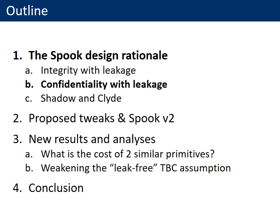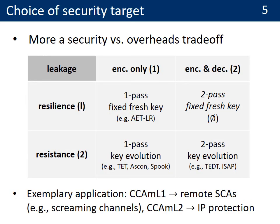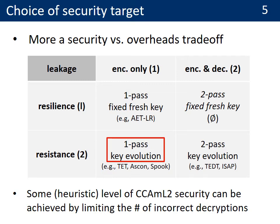We now move to the second part of the design rationale, which is about confidentiality with leakage. Our choice of security target is more the result of a trade-off between security and overheads. At the mode level, confidentiality in the presence of encryption leakage requires a key evolution scheme, and confidentiality in the presence of decryption leakage requires a two-pass design. A typical application for the first case is remote side-channel attacks, for example with screaming channels. A typical application for the second case is intellectual property protection. For Spook, we selected the CCAML1 security target in order to avoid a two-pass design, which we believe too expensive for lightweight applications, and we use a key evolution scheme since it comes for free with sponges.